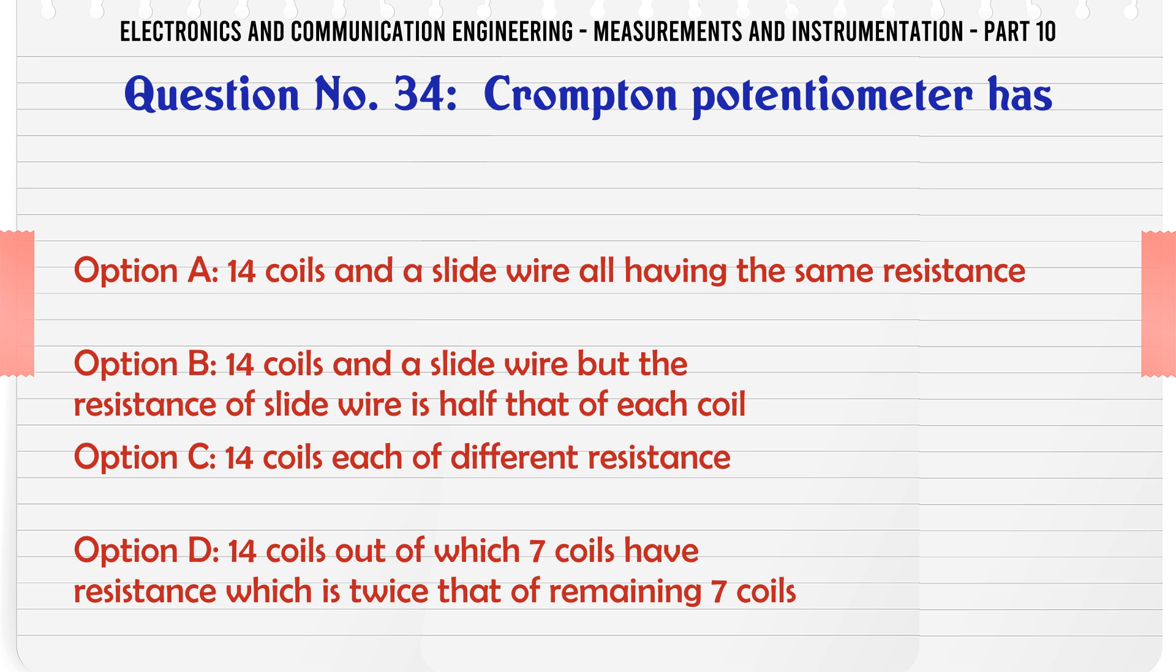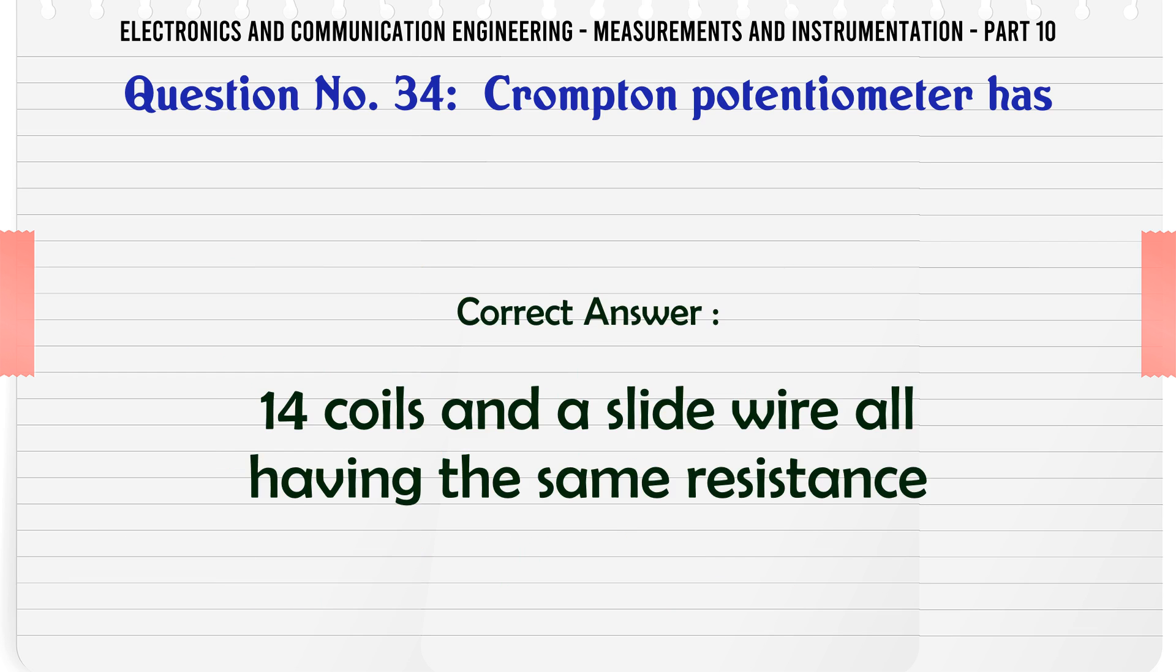Crompton potentiometer has: A) 14 coils and a slide wire all having the same resistance, B) 14 coils and a slide wire but the resistance of slide wire is half that of each coil, C) 14 coils out of which seven coils have resistance which is twice that of remaining seven coils.